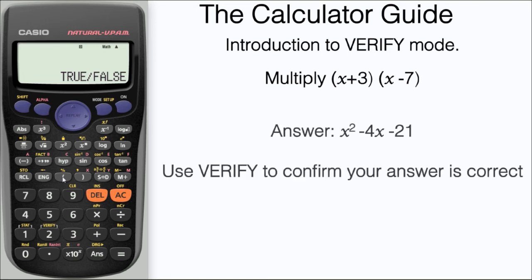And here we have our expanded expression x squared minus 4x minus 21. I'm going to use verify to confirm that the answer is correct.